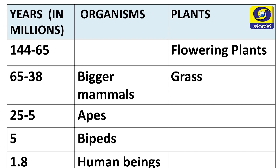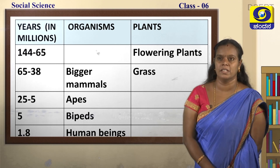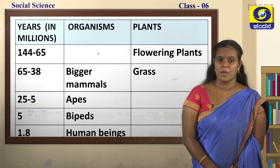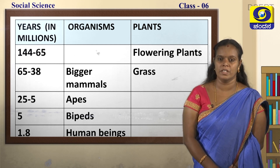Five million years ago, it was bipeds. Bipeds are animals which move with the help of their two legs. In 1.8 million years ago, it was human beings that evolved on earth. This is how human beings evolved. It is said that the first man appeared in Africa and then later migrated to different parts of the world.